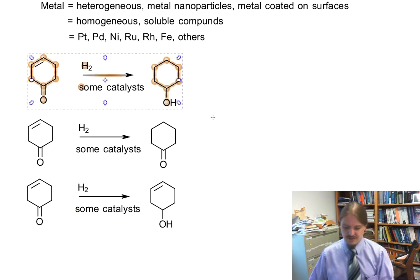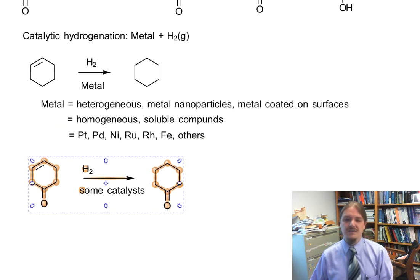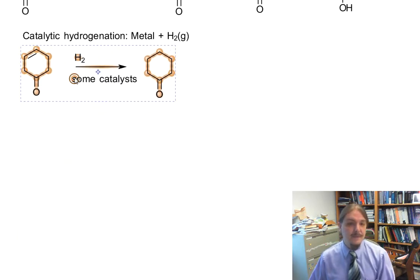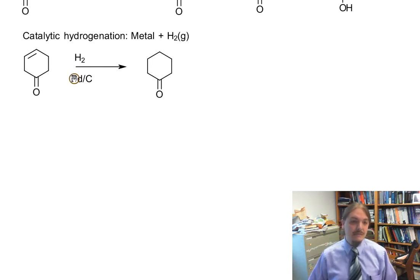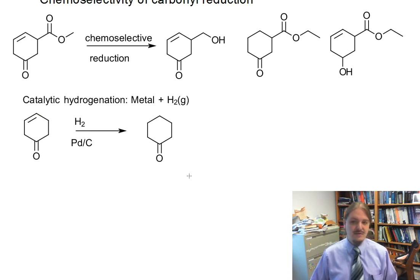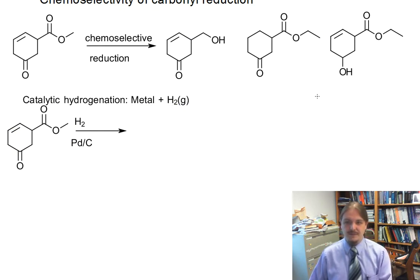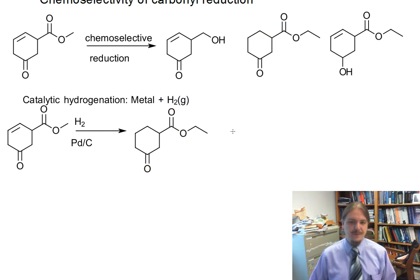I wanted to give you a reliable catalyst that only reduces the alkene, because we have all kinds of other reagents that are selective for the carbonyl. One reagent that is very selective for alkenes over carbonyl groups is palladium — specifically palladium coated on carbon. This is a reagent you can use to selectively reduce alkenes over carbonyl groups, generating a reduction of the alkene while ignoring the carbonyl functional groups.